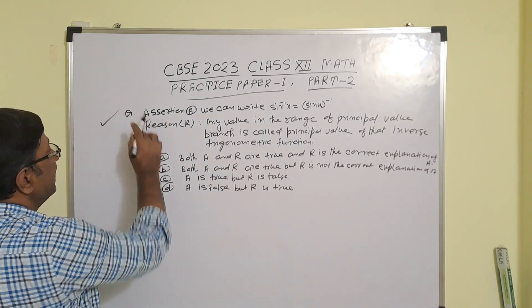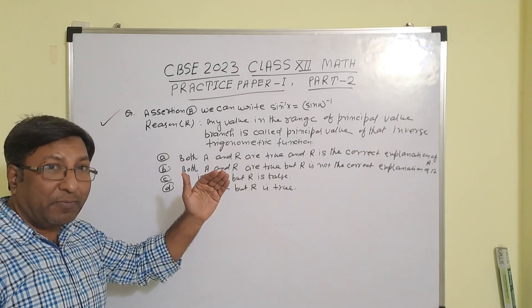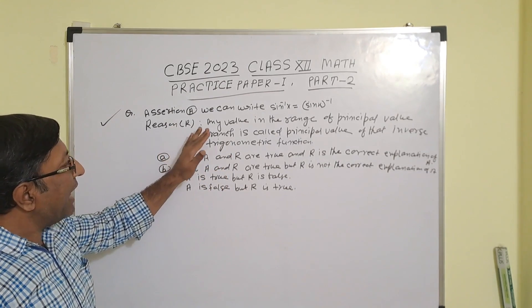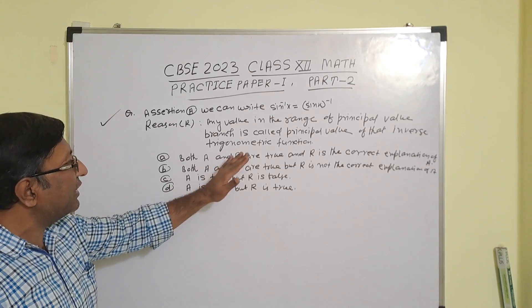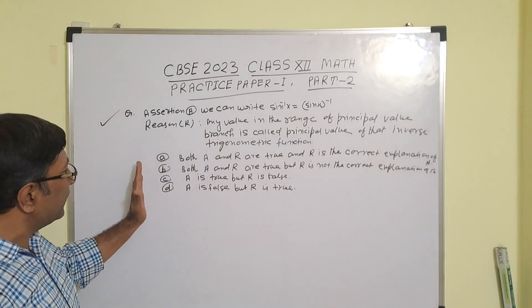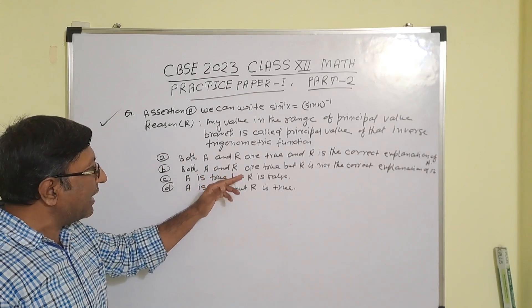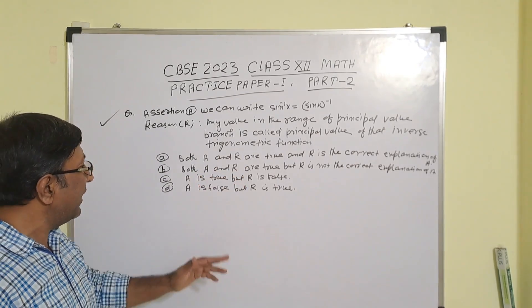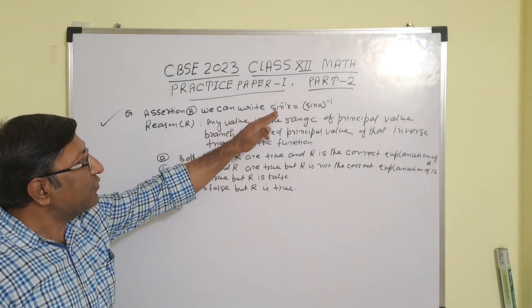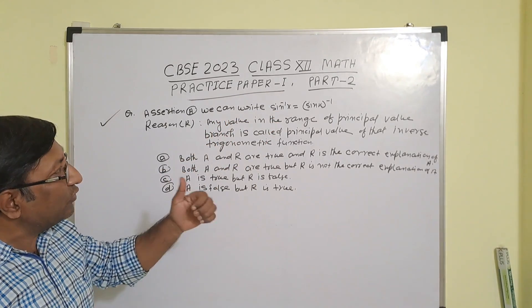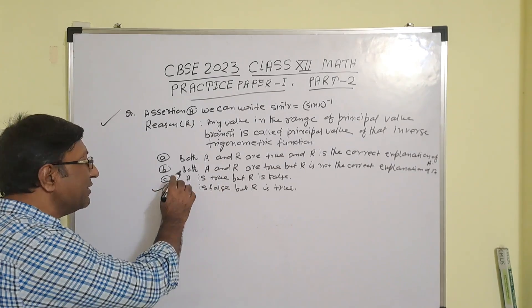Next question involves an assertion-reason. Assertion A states that sin⁻¹(x) equals sinh⁻¹. Reason R states that any value in the range of the principal value branch is called the principal value of that inverse trigonometric function. Since sin⁻¹(x) does not equal sinh⁻¹, assertion A is false. So the correct answer is: A is false but R is true.